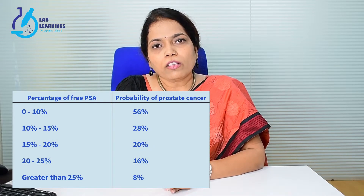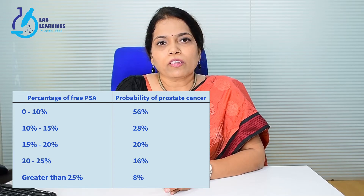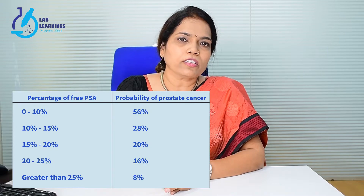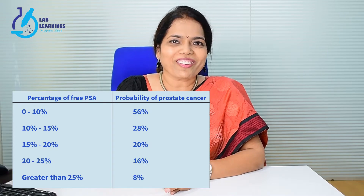The report shows total and free PSA. Free PSA should not be done alone — it should always be done with total PSA and reported as a ratio of free versus total. The risk of prostate cancer can be predicted from this ratio: the lower the ratio, the higher is the risk of prostate cancer.